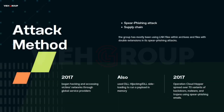APT10 has used both traditional and modern attack methods. Starting in their early phase, they used spearphishing attacks, and more recently they have adopted supply chain attacks as well. Since 2009, the group has mostly used LNK files within archives and files with double extensions in spearphishing attacks. In some cases, they also used identically named decoy documents and malicious launchers inside the same archive.